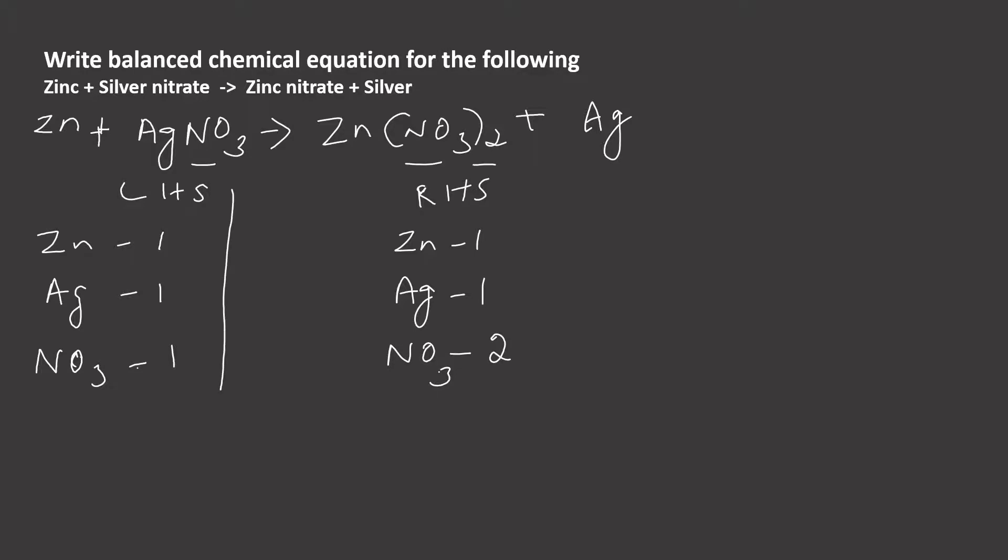Now, just you draw a column in between left-hand side atoms and right-hand side atoms to find the difference. See, if you write the difference and then if you go for balancing the equation you will get the accurate answer. To find the difference between left-hand side atoms of zinc and right-hand side atoms of zinc, 1 minus 1 that gives 0.